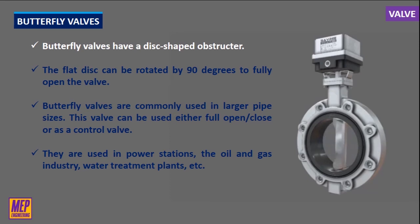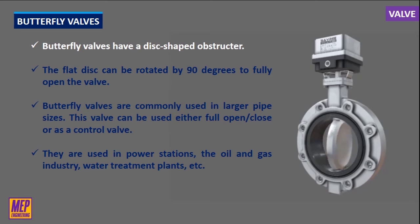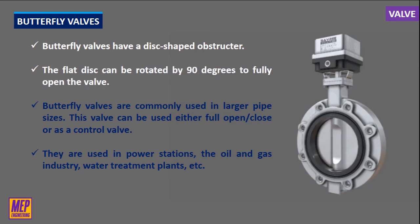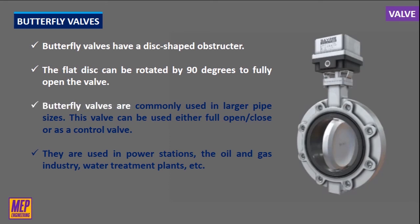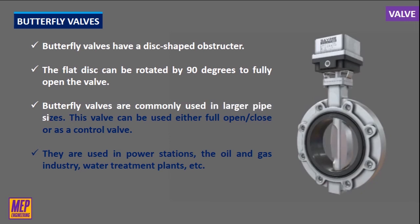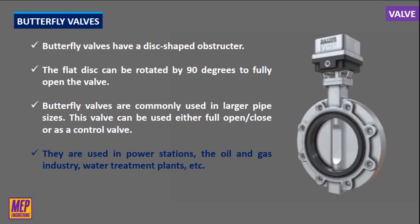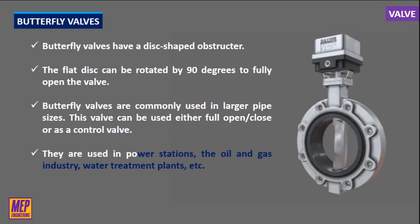Butterfly valves have a disc-shaped obstructor. They are the most simple but versatile valve in the industry. They have a single seal ring that acts as a seal between the valve body and disc, as well as between the pipe flanges and valve body. The flat disc can be rotated 90 degrees to fully open the valve. When the disc is perpendicular to the direction of flow, the flow is stopped; when rotated 90 degrees, the flow goes through the valve. Butterfly valves are commonly used in larger pipe sizes.